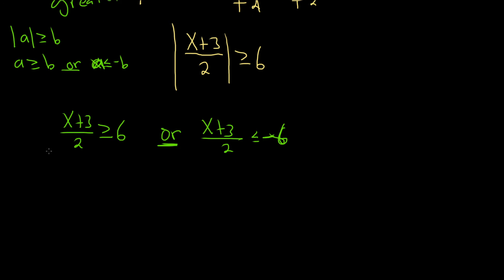To solve for x here, we'll start by clearing the fractions. We can multiply both sides by 2, so these cancel. So x plus 3 greater than or equal to, 6 times 2 is 12. Then we can subtract 3, subtract 3. So x is greater than or equal to 9.